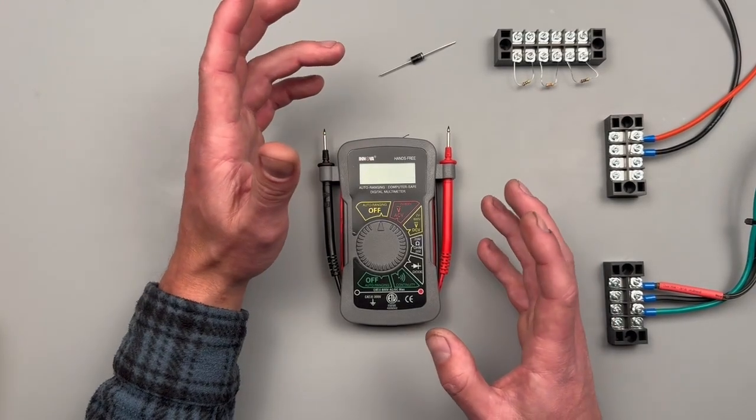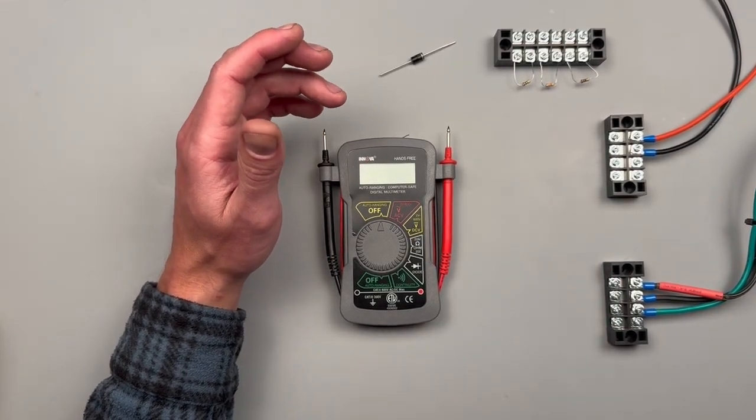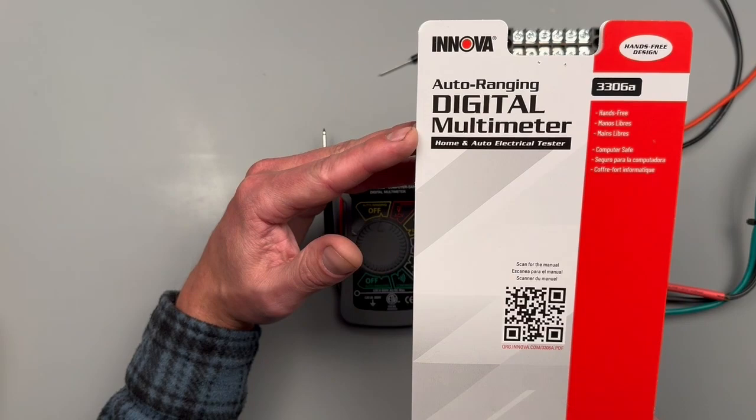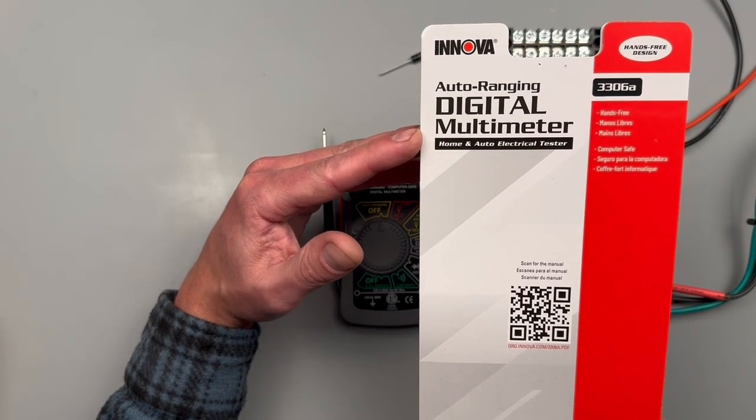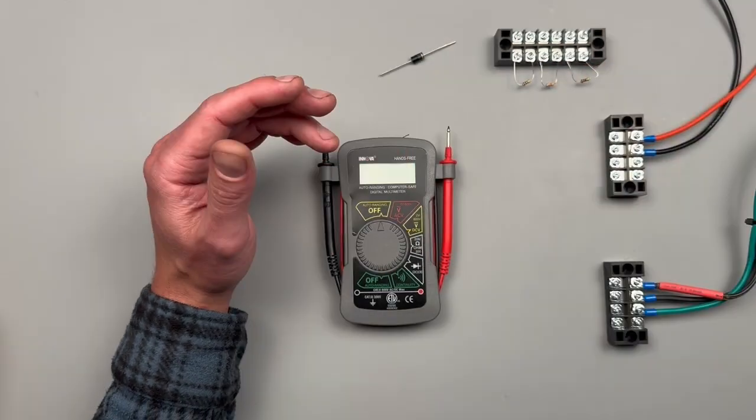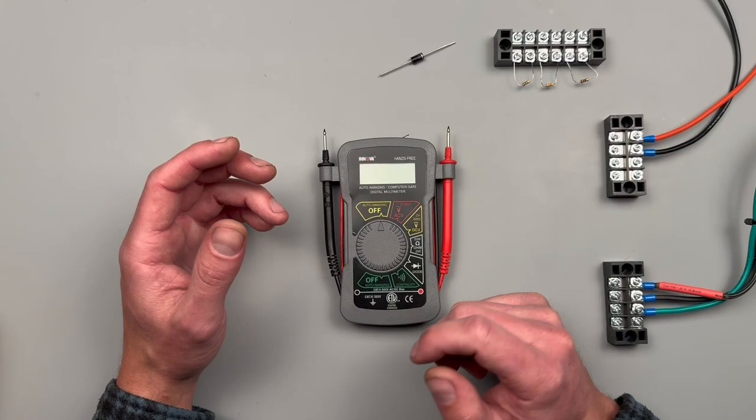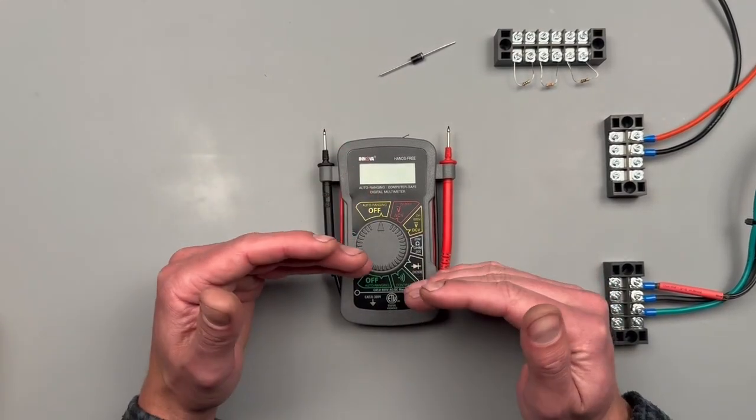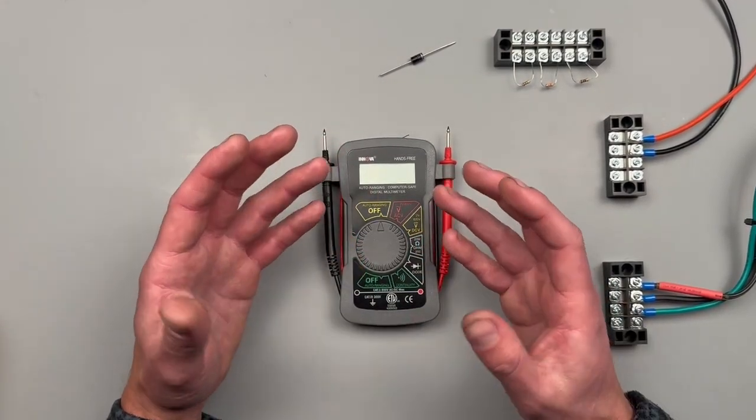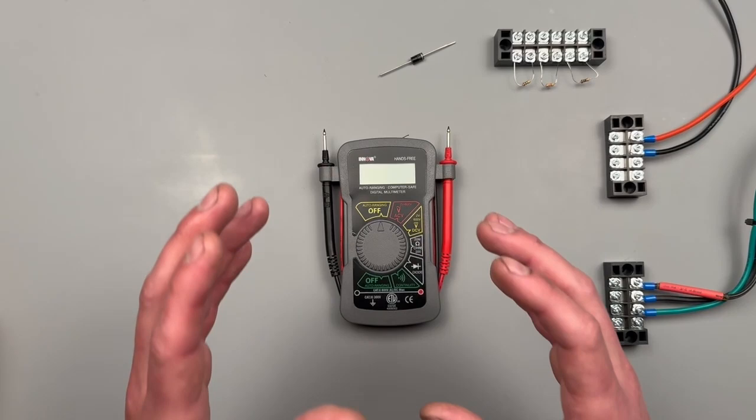Welcome to another adventure in the garage. Today we're going to be going over all the test settings for the Innova 3306 Alpha digital multimeter, probably picked up from your local automotive store. We're going to go over all the settings, how to use them, and I'm also going to give you my opinion on the meter.